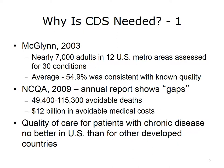The gaps between the average of what health plans provide and the 90th percentile of current quality measures indicate that between 49,000 and 115,000 deaths could be avoided with improved quality, and $12 billion could be saved in avoidable medical costs. Additionally, the quality of care for patients with chronic disease is no better, and in many ways worse, in the U.S. than in other developed countries.